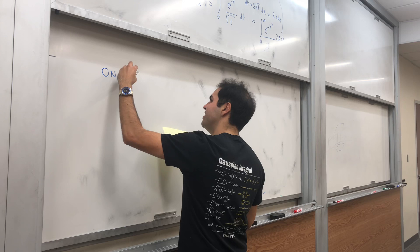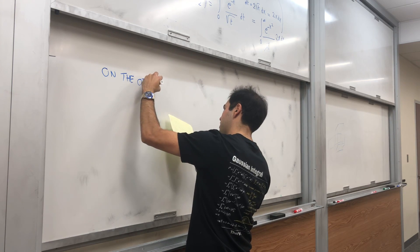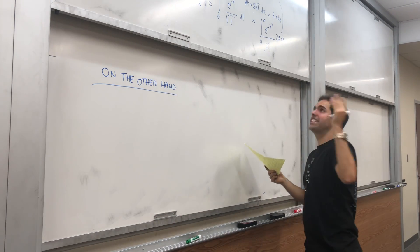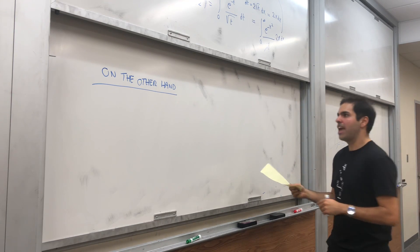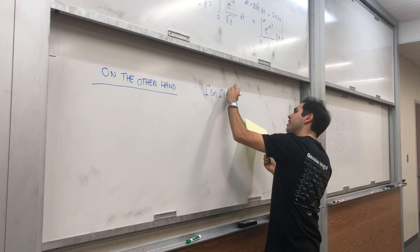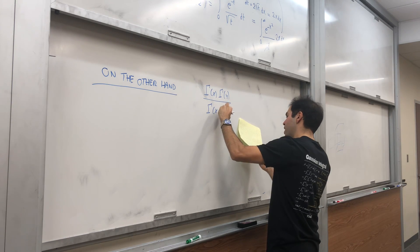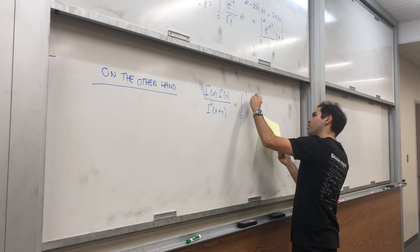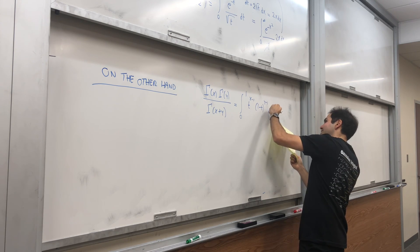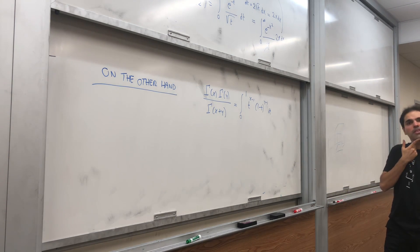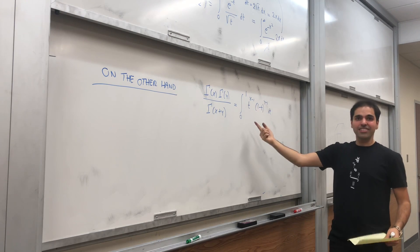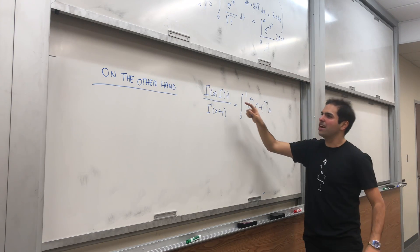It's all based on the following identity. On the other hand, there's this beautiful formula that relates gamma(x+y) in terms of gamma(x) and gamma(y). It says: gamma(x)·gamma(y) / gamma(x+y) equals the integral from 0 to 1 of t^(x−1) · (1−t)^(y−1) dt. I think sometimes it's called B(x, y) — the beta function. And it turns out this is true.